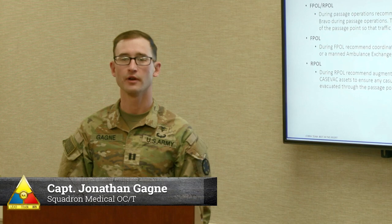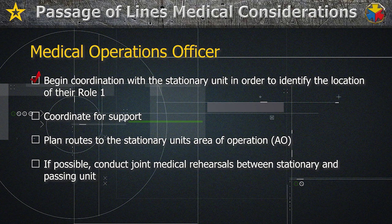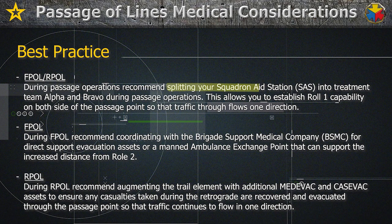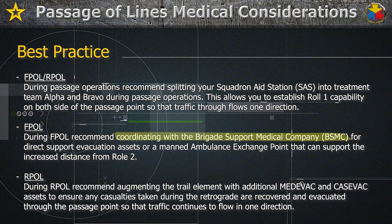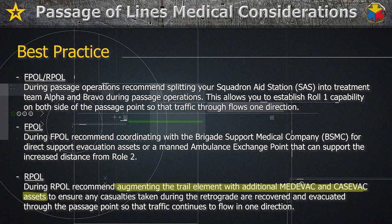The medical operations officer must be integrated in the planning process and begin coordination with the stationary unit to identify the location of their Role 1, coordinate for support, and plan routes to the stationary unit's AO. If possible, conduct joint medical rehearsals between stationary and passing units. A best practice is splitting your squadron aid station into Treatment Team Alpha and Bravo during passage operations, allowing you to establish Role 1 capability on both sides of the passage point so that traffic flows one direction. During FPOL, coordinate with the brigade support medical company for direct support evacuation assets or a manned ambulance exchange point to support the increased distance from Role 2. For RPOL, augment the trail element with additional medical and CASEVAC assets to ensure any casualties taken during the retrograde are recovered and evacuated through the passage point so that traffic continues to flow in one direction.